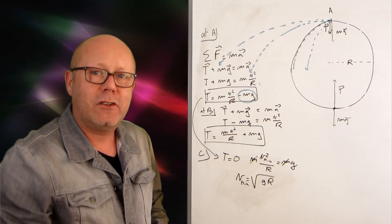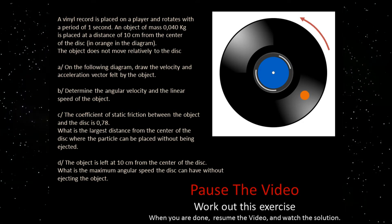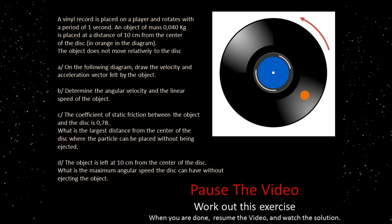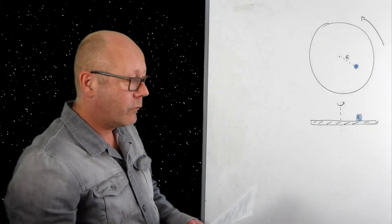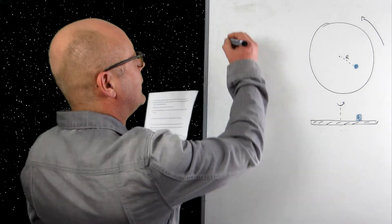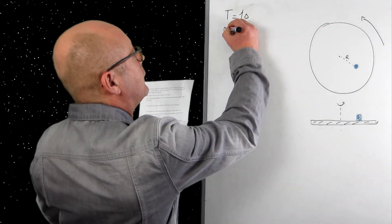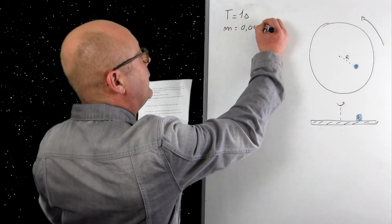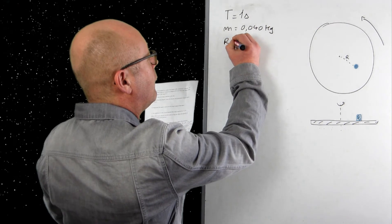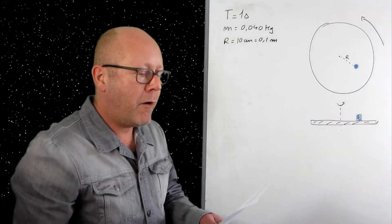Let's go to the next exercise. A vinyl record is placed on a player and rotates with a period of one second. An object of mass 0.040 kg is placed at a distance of 10 cm (r = 0.1 m) from the center of the disk. The object does not move relative to the disk. Draw the velocity and acceleration vectors felt by the object.